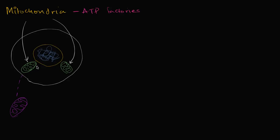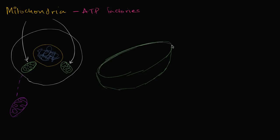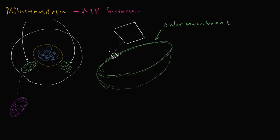Let's talk about the actual structure of mitochondria. I'll draw a simplified cross-section of a mitochondrion — cutting it in half. What I've drawn right over here is its outer membrane. All of these membranes are going to be phospholipid bilayers. If I were to zoom in, we would see a bilayer of phospholipids — hydrophilic heads facing outwards and hydrophobic tails facing inwards.